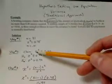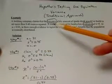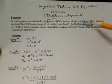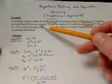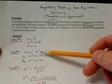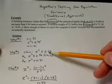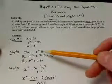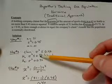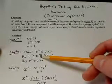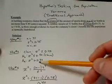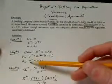In step number two, we're going to write the claim in symbolic form. The claim says that the variance of the population in the amount of sports drinks is no more than 0.40 ounces squared. So the claim is sigma squared is less than or equal to 0.40. Since the claim does contain equality, we put the claim in the null hypothesis. The opposite is sigma squared is greater than 0.40, which goes in the alternative hypothesis.